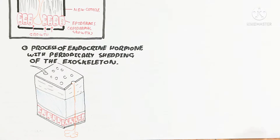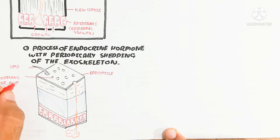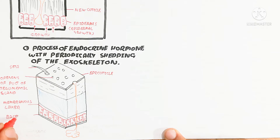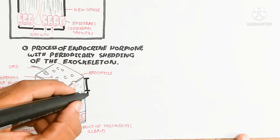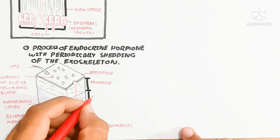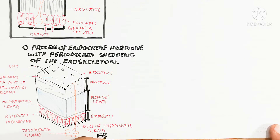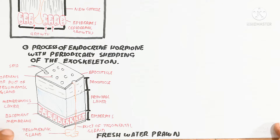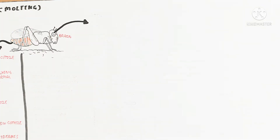The important thing here is the process of endocrine hormones controlling the periodically shedding of the exoskeleton. So here is the skin of basically a freshwater prawn as an example for clarifying the insect cuticle or insect skin. This skin contains an epicuticle on the upper part and a basement membrane below, with a membranous layer above the basement membrane. Between the membranous and basement membrane layer is the epidermis, which contains the tegmental gland producing antimicrobial protein. The epidermis upper part is the principal layer, while above it is the procuticle and epicuticle.